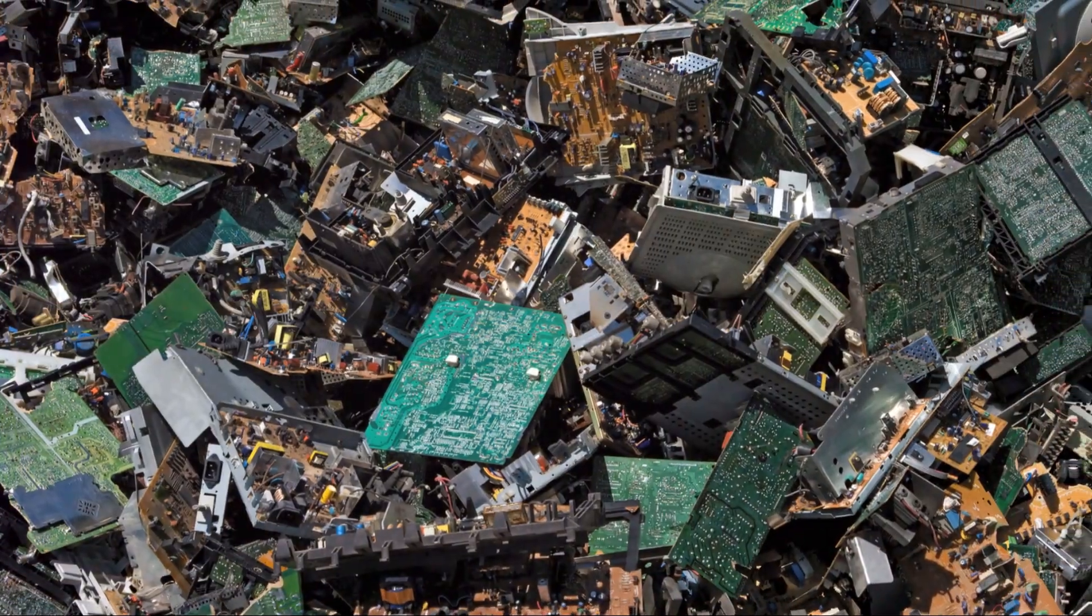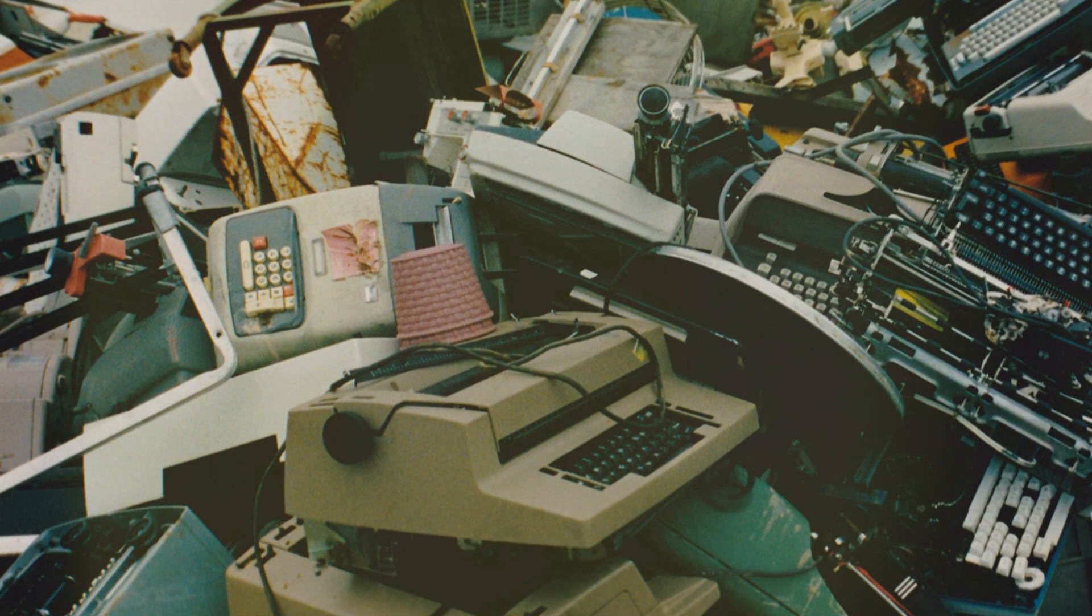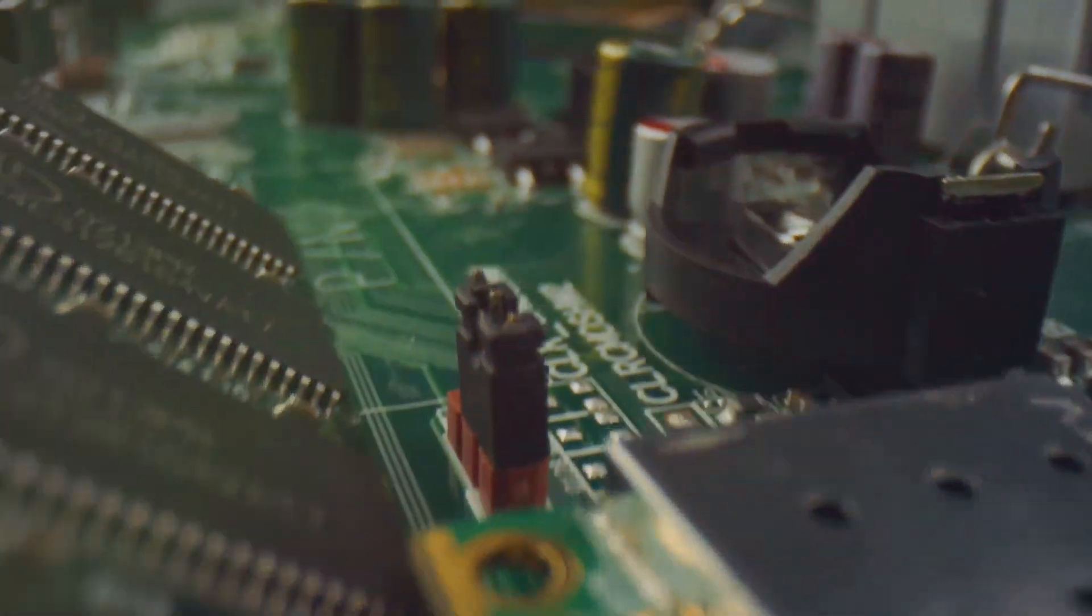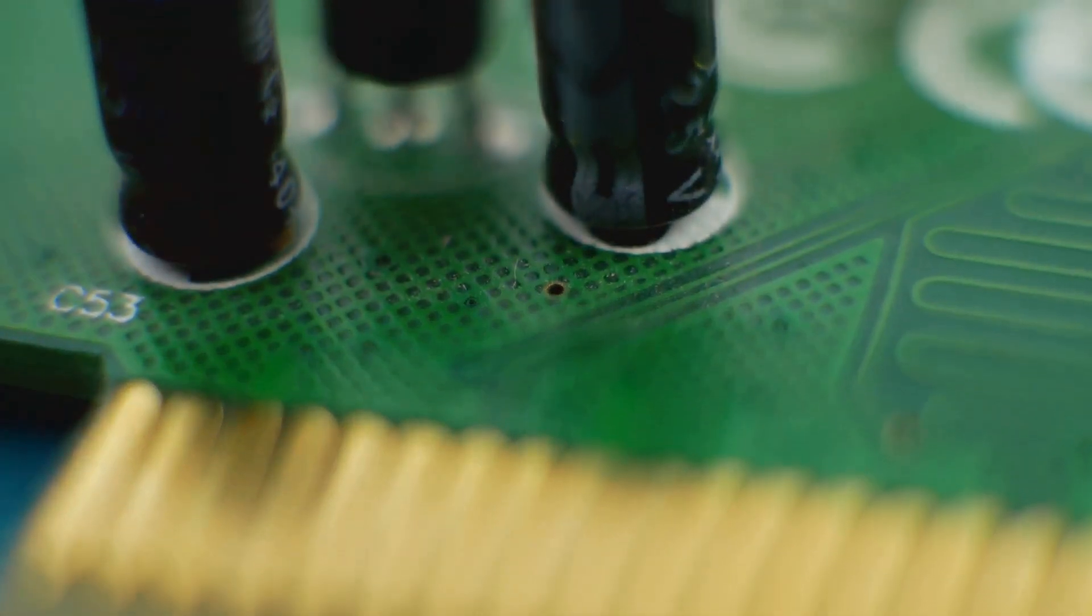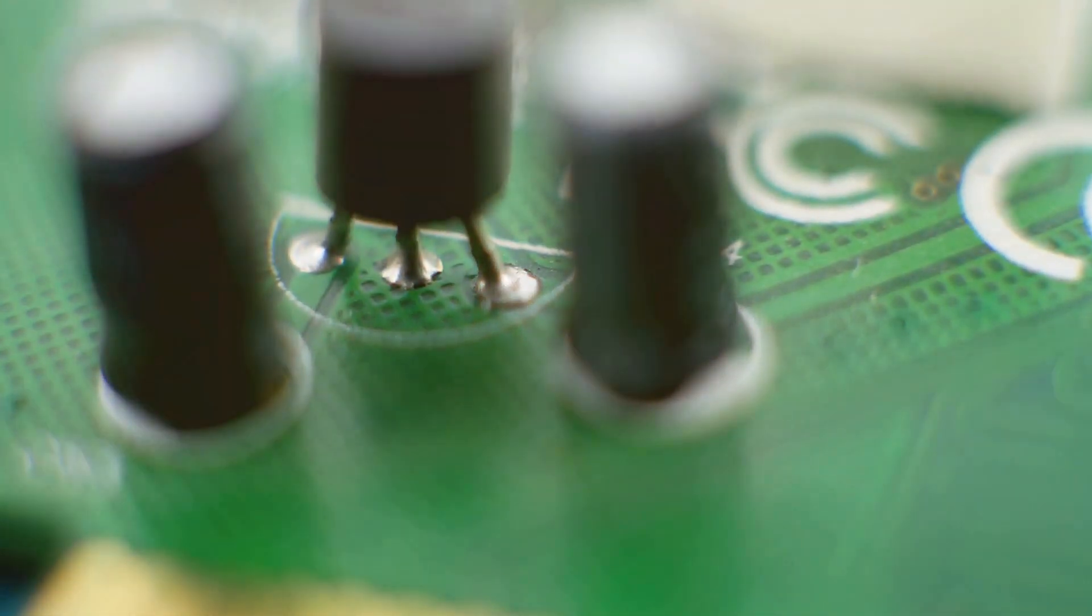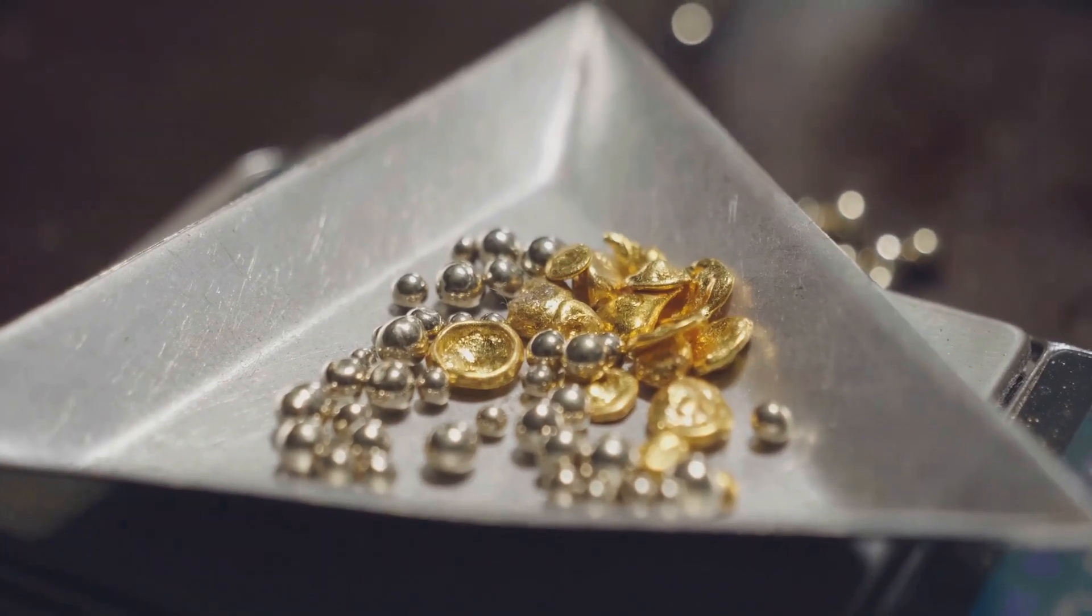Hey there future gold prospectors, did you know that your old electronics are more than just outdated gadgets? They're like tiny treasure chests hiding valuable metals like gold. It's true, gold is used in circuit boards and connectors because it's an excellent conductor of electricity and resists corrosion.